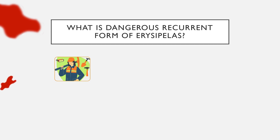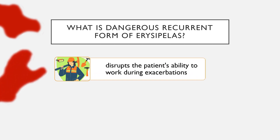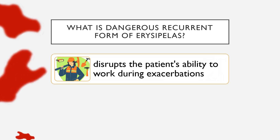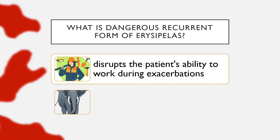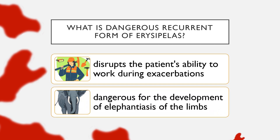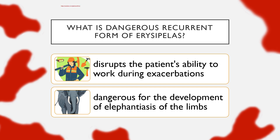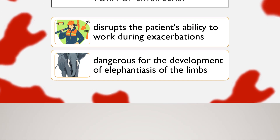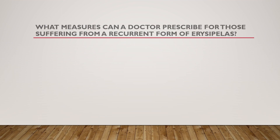What is dangerous about the recurrent form of erysipelas? The recurrent form not only disrupts the patient's ability to work during exacerbation. It is dangerous for the development of lymphedema of the limbs due to obliteration of the lymphatic vessels of the skin and subcutaneous tissue. This limb deformity is currently almost intractable.